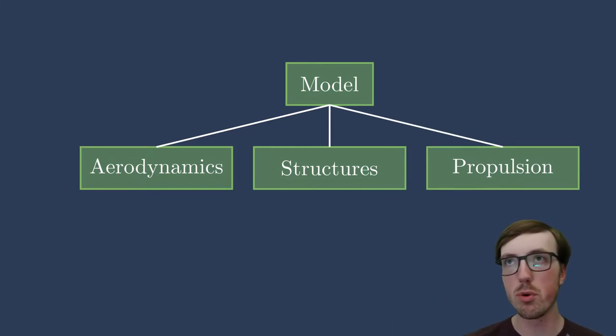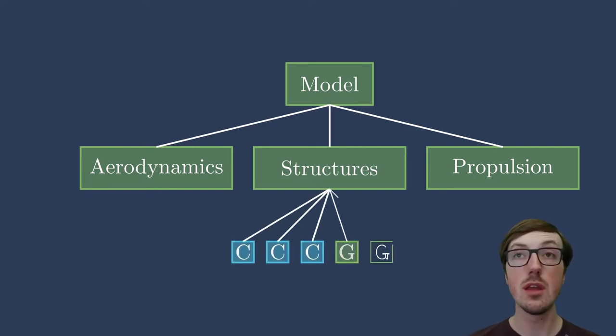Then within any one of these top level groups, we can have additional nested groups here shown in green with these g's, or other components here shown in blue with c's. I'm just showing it here for the structures, not for every single top level group. But just know that you can have as many arbitrarily nested groups or components as you want in a model. Here I'm advocating you to say, my top level groups should be disciplinary breakdowns. They should be something I can point to and say, this is where the structural analysis happens. This is where the propulsive analysis happens. You can connect variables to and from these groups from that top level. It makes it easier to understand what's going on in your model if you can point to a group and say, this is the nugget of the model that is being represented here.